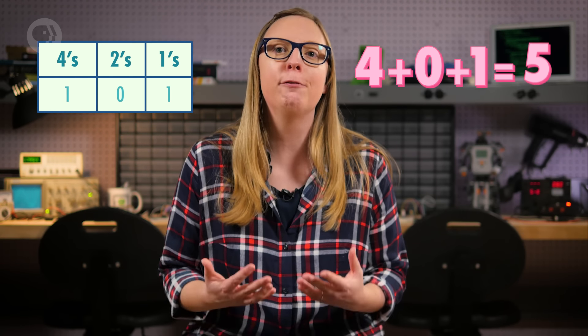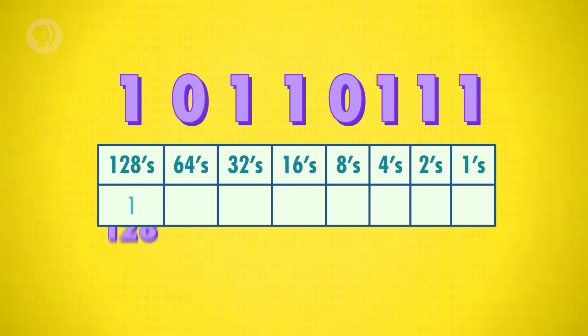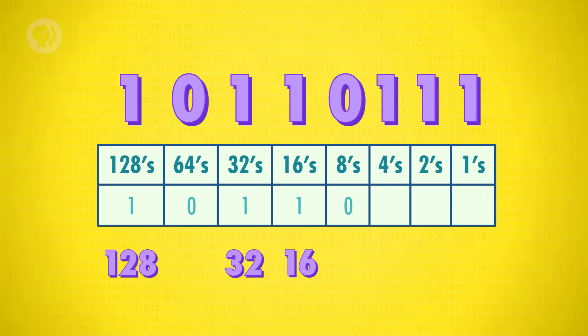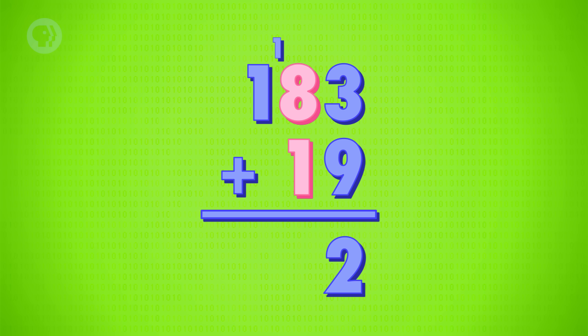Binary works exactly the same way — it's just base 2. There are only two possible digits in binary, 1 and 0, so each multiplier has to be 2 times larger than the column to its right. Instead of 100s, 10s, and 1s, we now have 4s, 2s, and 1s. For example, the binary number 101 means 1 four, 0 twos, and 1 one — add those together and we've got 5 in base 10. To represent larger numbers, binary needs a lot more digits. For example, 10110111 in binary — converting each column — gives us 128 + 32 + 16 + 4 + 2 + 1, which adds up to 183.